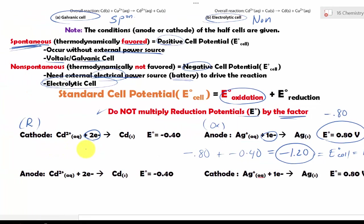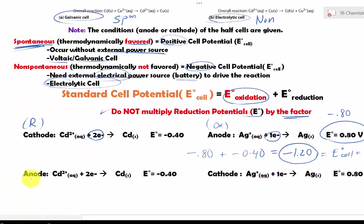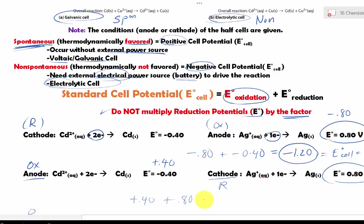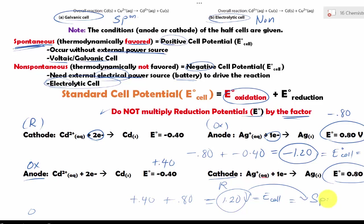Let's try another problem where I reverse the conditions, making cadmium the anode. Because it is now oxidation, the sign flips to positive 0.40. The cathode remains reduction, so it stays the same. Adding the oxidation value of positive 0.40 plus the reduction value of positive 0.80 gives us 1.20 volts. Because this E_cell is positive, this is a spontaneous reaction. That's how you determine if a redox reaction is spontaneous or thermodynamically favored, versus non-spontaneous, based on the E_cell potentials.